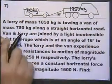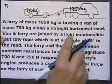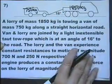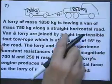Along a straight horizontal road, the van and lorry are joined by a light, inextensible, taut tow rope, which is angled at 16 degrees to the road.